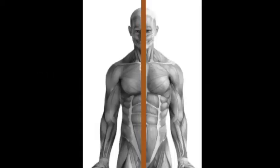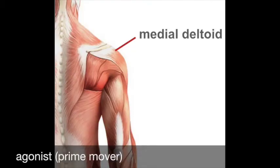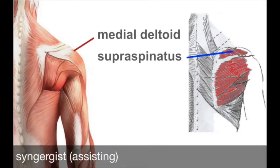Shoulder abduction. Remember the midline — the imaginary line that divides the body into right and left sides? From anatomical position, the arm moves away from the midline to the side along a frontal plane. The agonist or prime mover of shoulder abduction is the medial deltoid, or middle head of the deltoid. This makes sense because the medial deltoid attaches to the scapula and humerus, crossing over the top of the shoulder joint. The muscle generates force and pulls on the bones. The synergist or assisting muscle is the supraspinatus, which is deep to the medial deltoid and is one of the rotator cuff muscles.